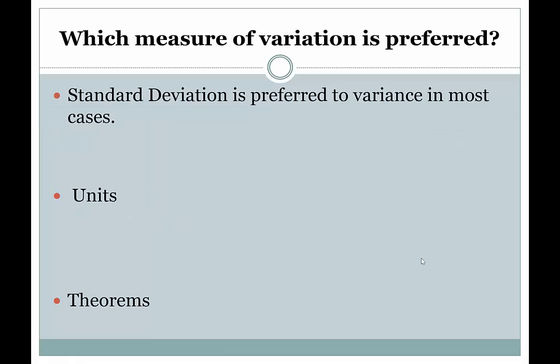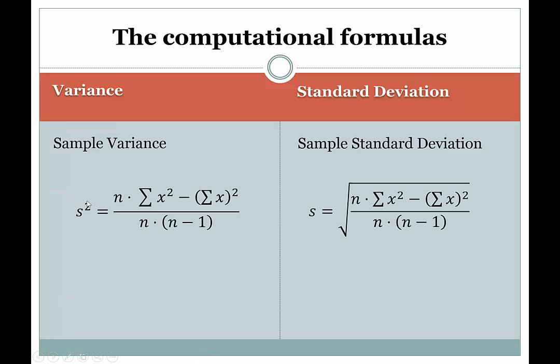Which measure of variation is preferred? Well, we're going to prefer the standard deviation to variance in most cases. The reason why is because that square that we saw on the expression for variance, this square here, that square indicates, in the process of doing the calculation, we actually square all the measurements.